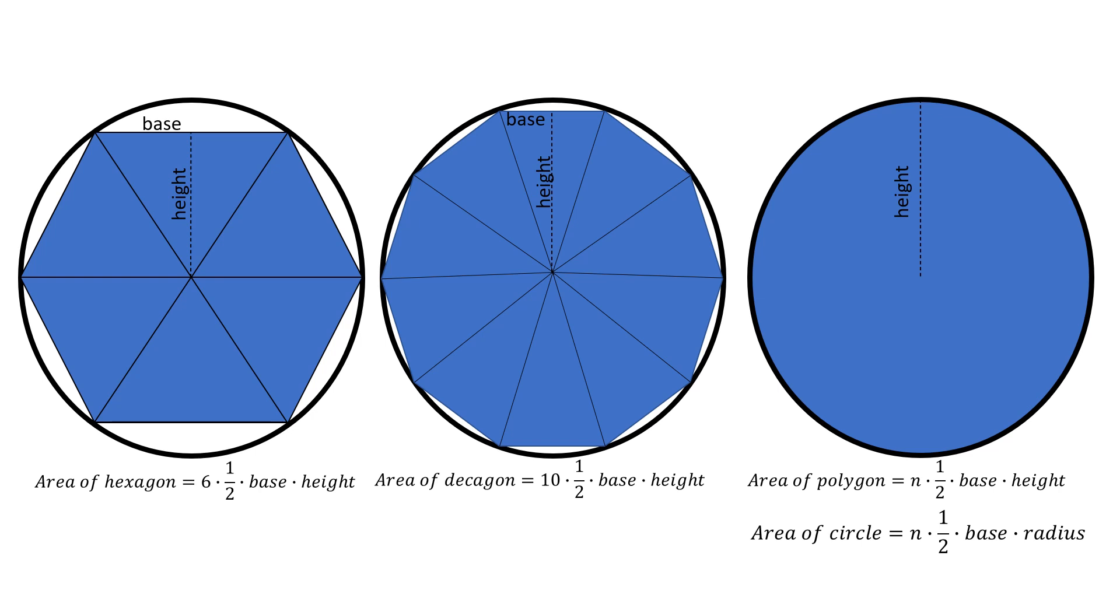So instead of area of polygon, we have area of circle. Notice that our height is going to change to our radius, because we're going from the center all the way out to the side, center all the way out to the side, that's called our radius. So now when we're working with the area of circle, we're doing N times a half times base times radius.